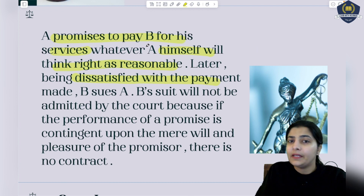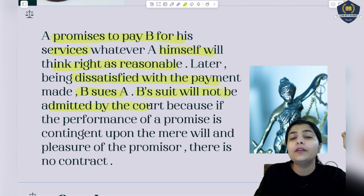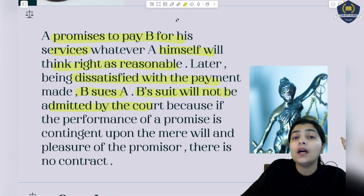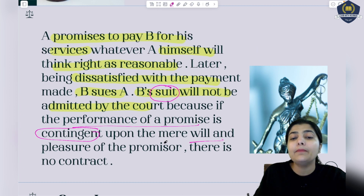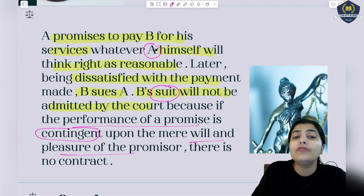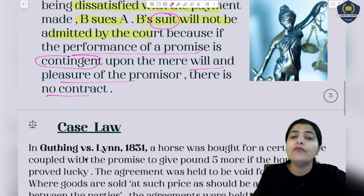Later, when A pays B, B becomes dissatisfied because he worked more. So B sues A. But B's suit will not be admitted by the court - the court will not admit it at all. Why? Because the performance of the promise is contingent upon the mere will and pleasure of the promisor. The payment depends on A's will and wish, which is just a contingent thing. So there is no contract, no certainty, no particular thing given. This agreement is completely void.